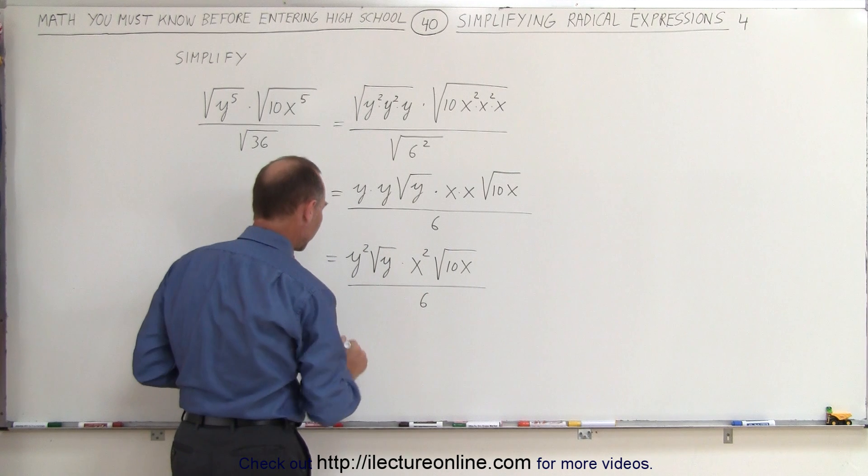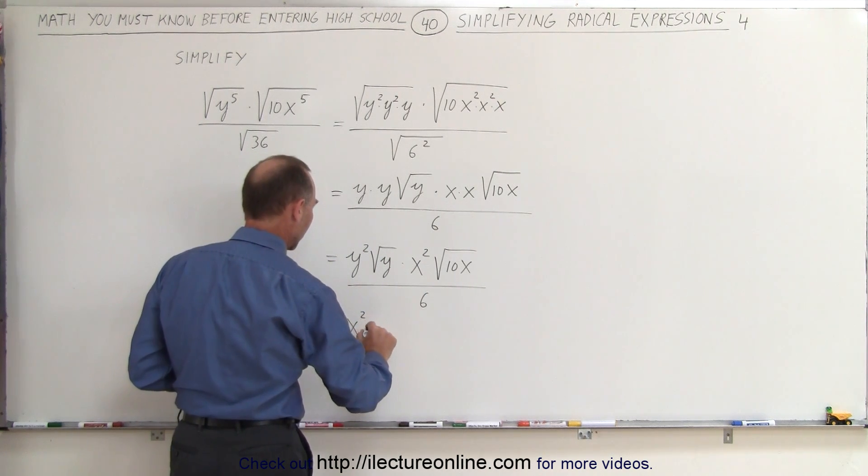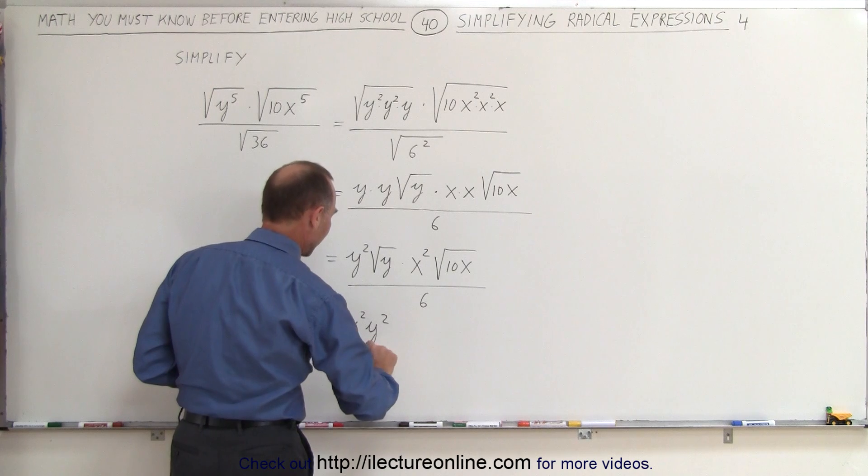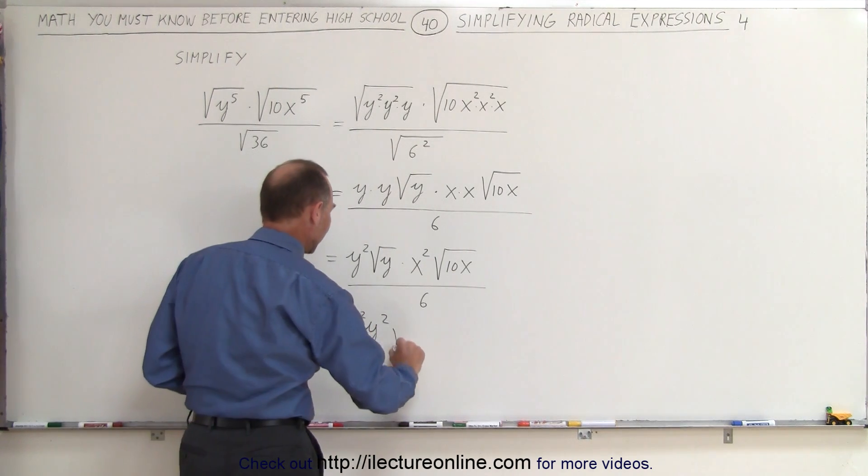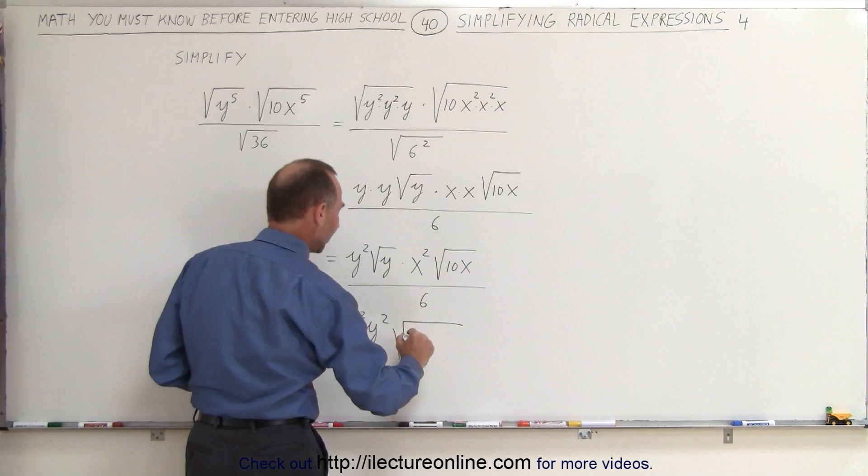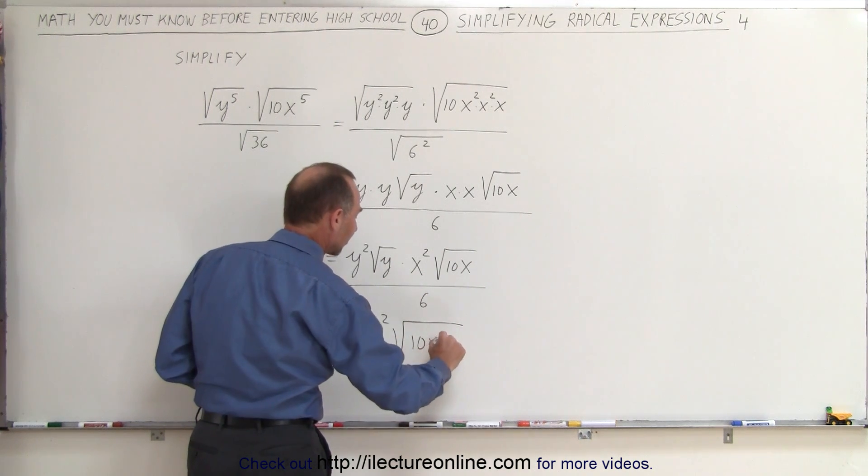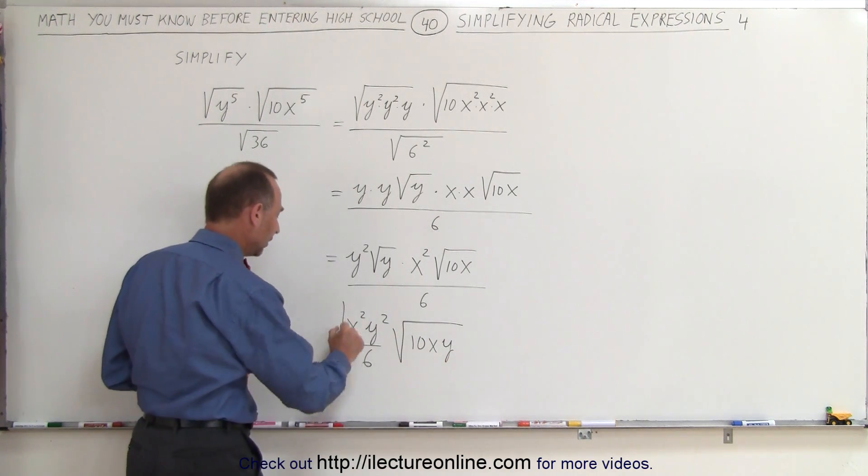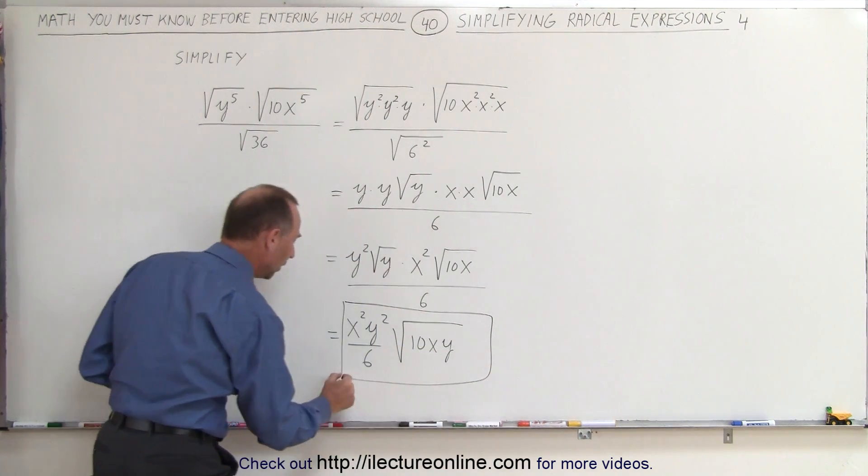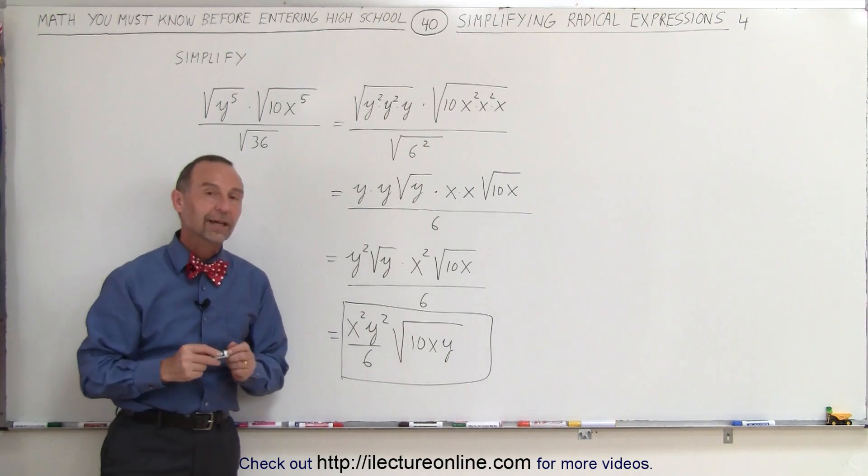y squared, x squared, and 6. So this can be written as x squared, y squared, divided by 6. We typically write x before the y, and then times the square root of what's left, and this would be 10 times x times y. Again, we typically write the number before the x before the y like that. And this would be the simplified form of our original expression.